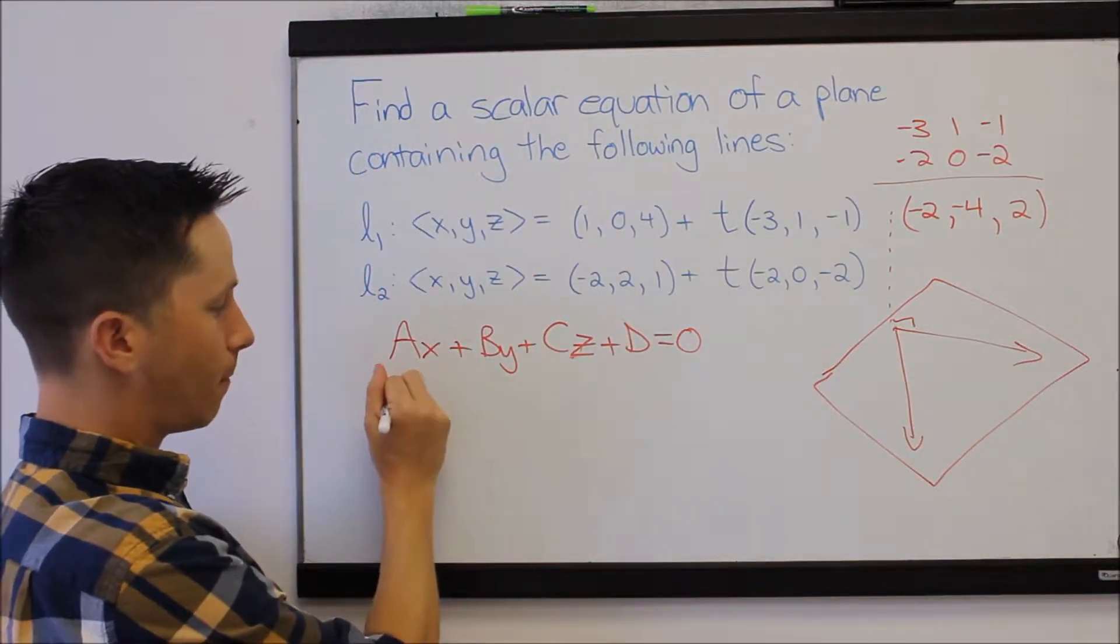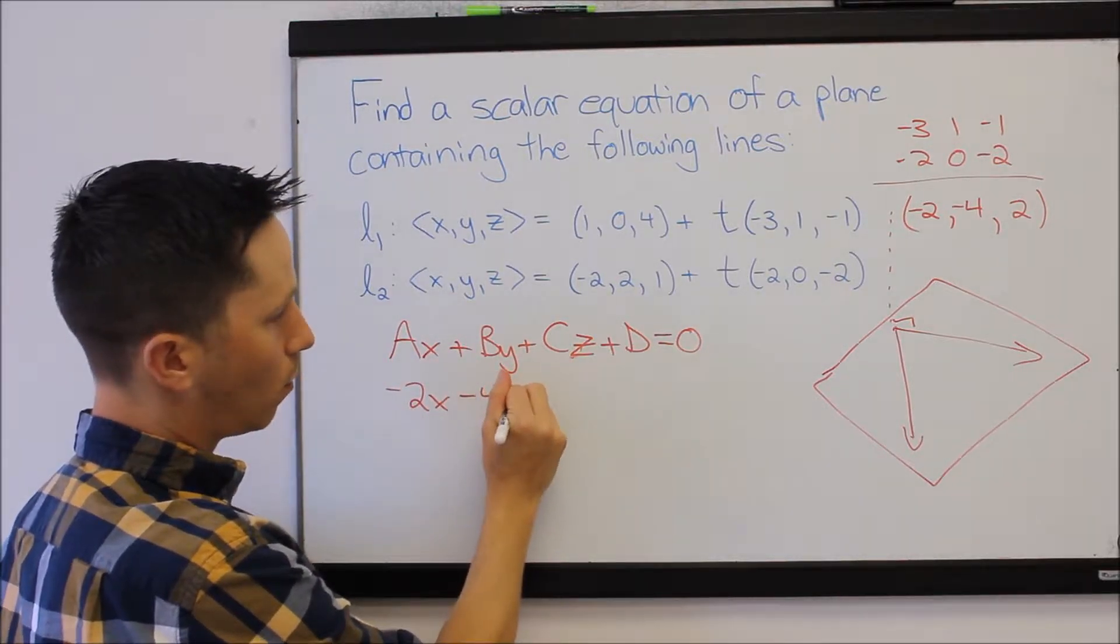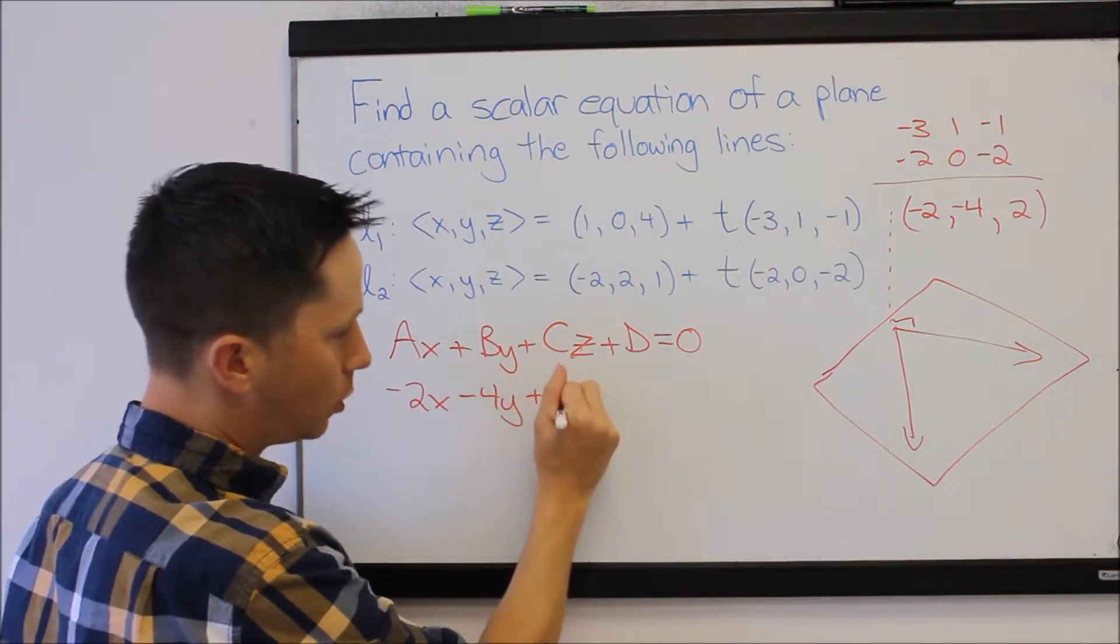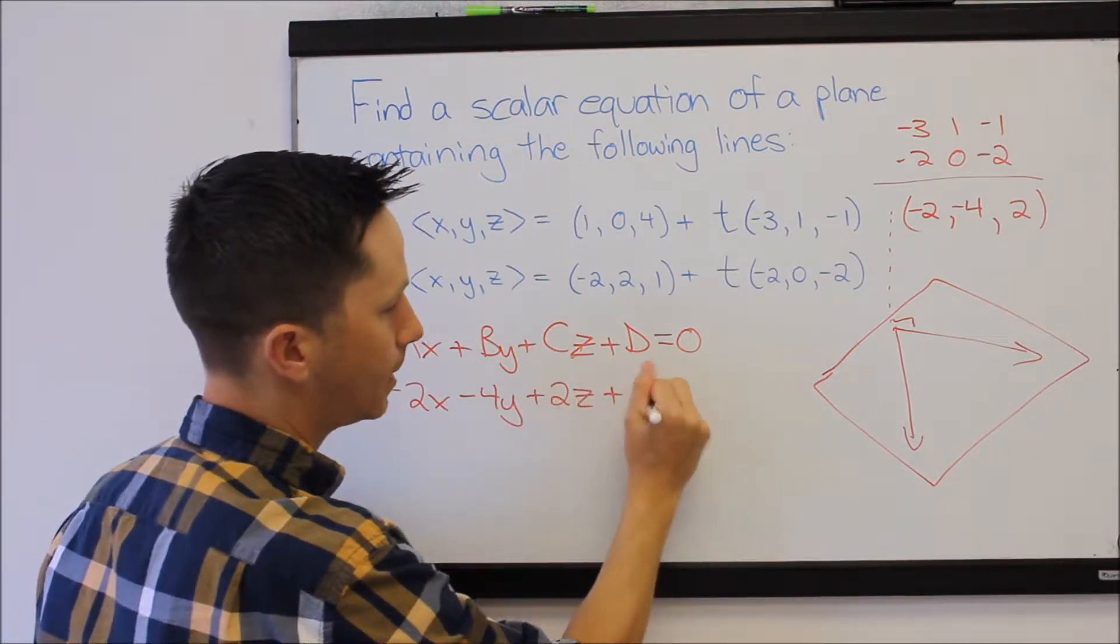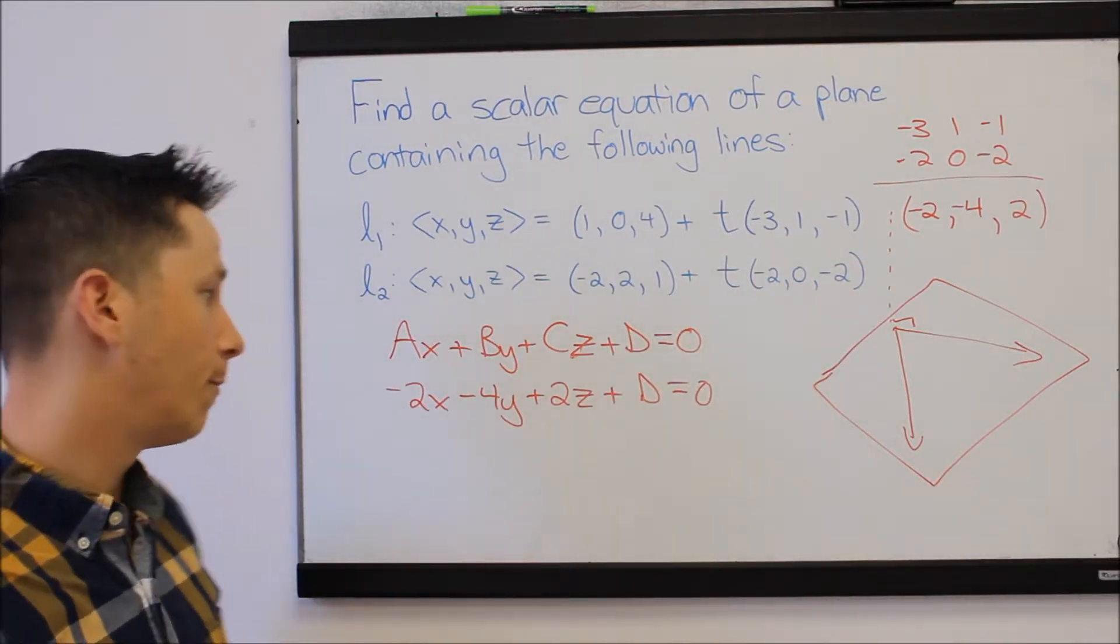I'm going to plug those in for my A, so negative 2x minus 4y plus 2z plus D equals 0. The coefficients here, again, ABC, are the components of the normal vector.